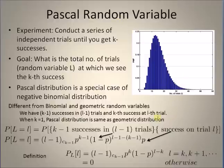This is a MATLAB plot that shows the probability mass function of a Pascal random variable with k equal to 4, and l ranging from 4 to infinity — in this case we show up to 50 values.